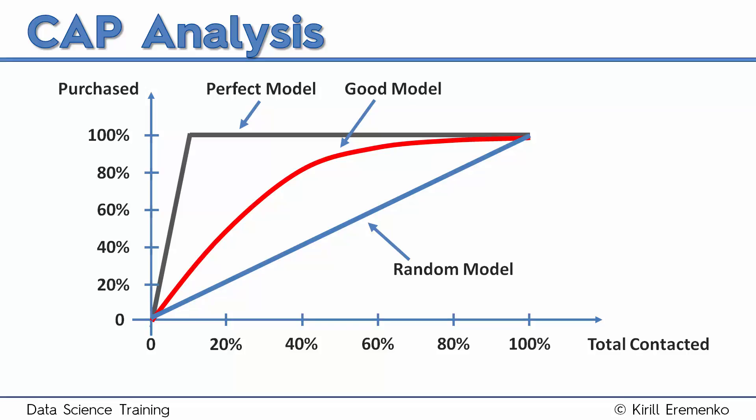And the gray line which is the perfect model, or when you have a crystal ball when you can select all of the future churners or purchasers or whatever action takers, and you can select them right away on the dot without even selecting one single person that you don't want to select.